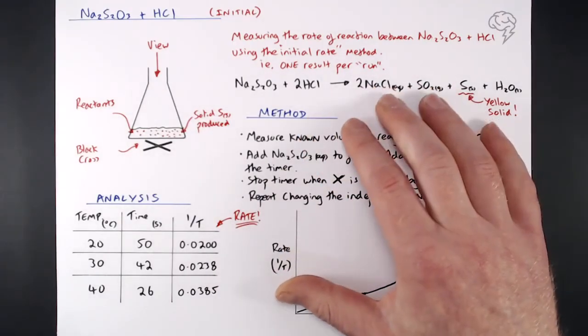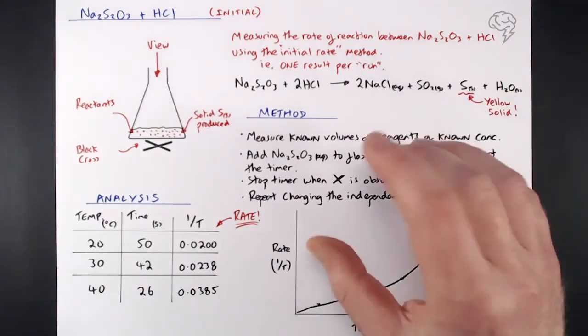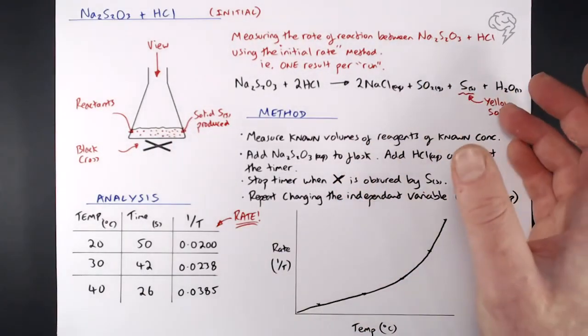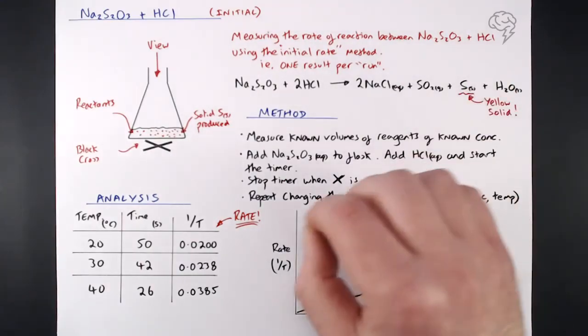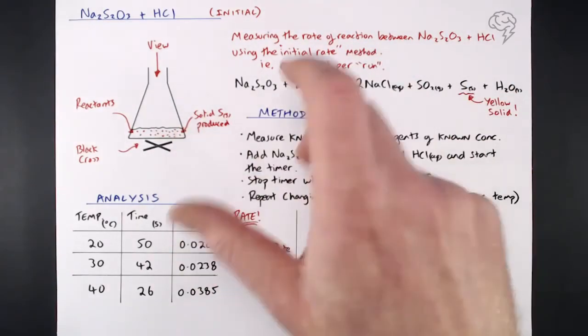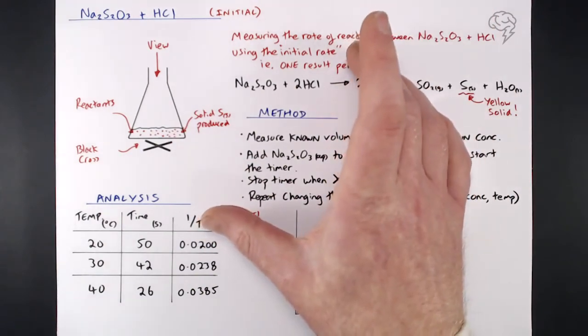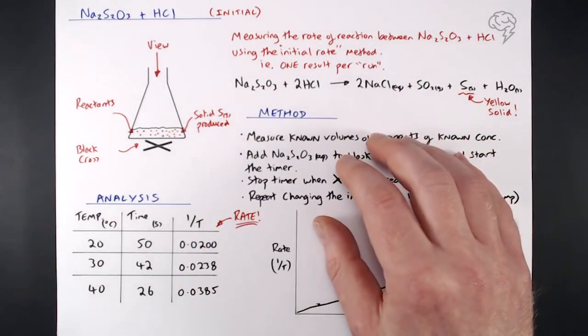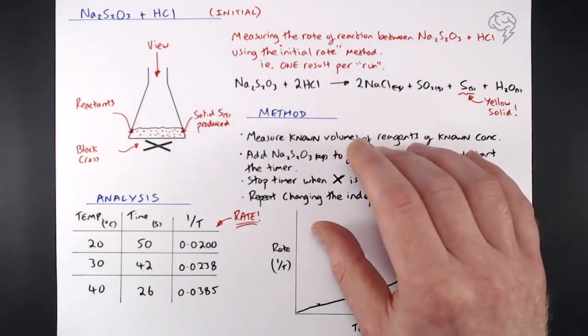One thing I didn't have room to write on here were errors, sources of error for this. There are measurement errors and stuff that comes down to human error. It could be the swirling of the flask. You got to make sure you just swirl it a couple of times and put it down and leave it, or don't swirl it at all. You've got to maintain consistency with that.